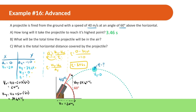Part B: what will be the total time the projectile is in the air? We know when it goes halfway through the time is 3.46 seconds. Because of symmetry — when launched from the ground — it takes another 3.46 seconds to come all the way back down. So the total time in the air is 3.46 times 2, which equals 6.92 seconds.